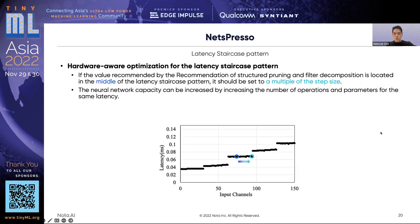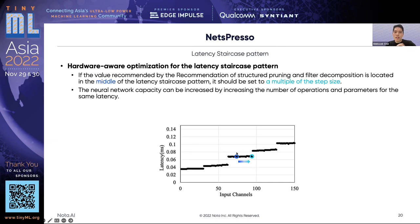The recommendation of structured pruning and filter decomposition only considers the layer-wise importance according to its criterion. For hardware-aware optimization, the pruning ratio and rank ratio from the recommendation should be adjusted because the latency of the convolution layer has a staircase pattern. If the recommended value is located in the middle of the latency staircase pattern, it should be set to a multiple of the step size. Then, the neural network capacity can be increased by increasing the number of operations and parameters for the same latency.